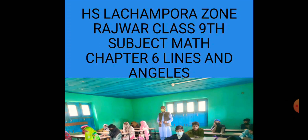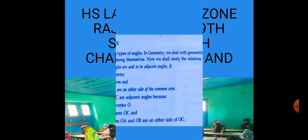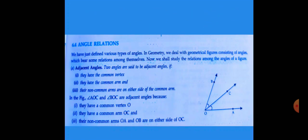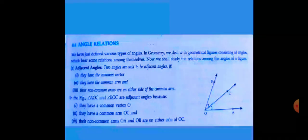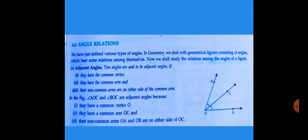Ek bada fir pardnye jarae hain. Aaj ki sabak mein hum pehle angle relations padhnye jarae hain. We have just defined various types of angles. In geometry we deal with geometrical figures consisting of angles which bear some relations among themselves. Now we shall study the relations among the angles of a figure.